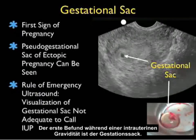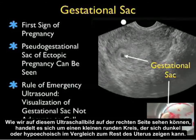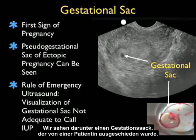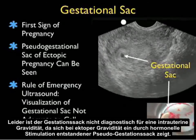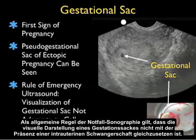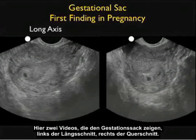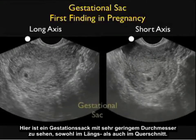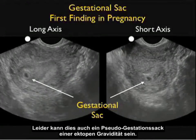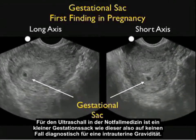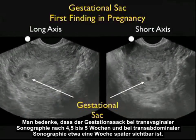The first finding during an intrauterine pregnancy is a gestational sac — a small round dark or hypoechoic circle relative to the rest of the uterus. Unfortunately, a gestational sac alone is not diagnostic of an intrauterine pregnancy, as a pseudo-gestational sac from ectopic pregnancy can appear due to hormonal stimulation. Here are two video clips showing the gestational sac in long axis and short axis. A small gestational sac is in no way diagnostic of an intrauterine pregnancy for the emergency physician sonographer. The gestational sac is seen at about 4.5 to 5 weeks on transvaginal sonography and about a week later on transabdominal sonography.